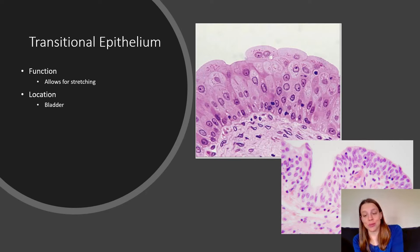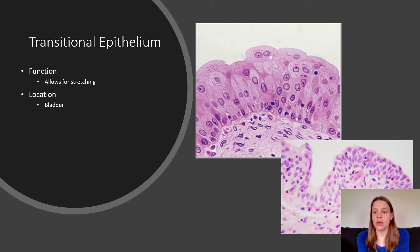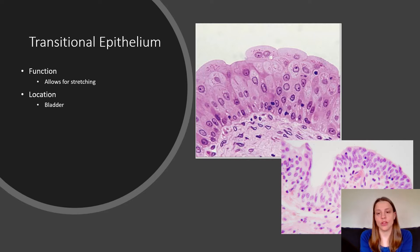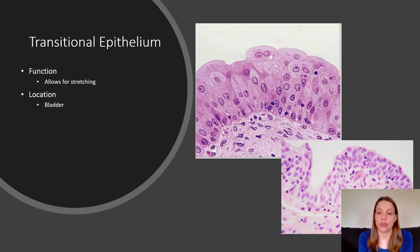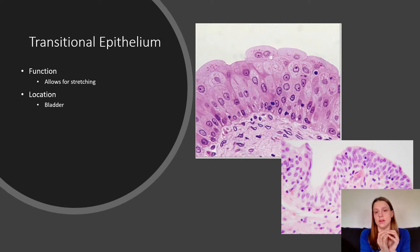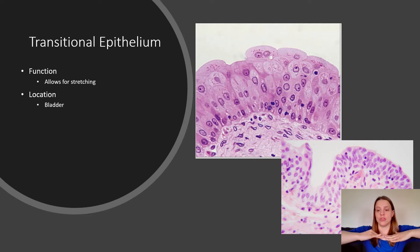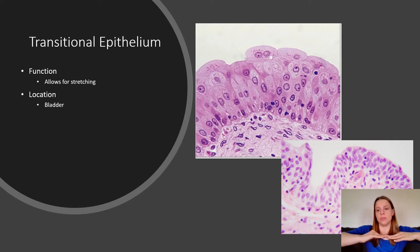Here we have transitional epithelium. I put two pictures on this slide — one is a really great picture, and the other is more like what you will see in the lab, since our slides are kind of washed out. The function of transitional epithelium is that it allows for stretch. You find it in the bladder. When your bladder is empty, the cells are bubbled up and round, but when your bladder gets full and has to stretch out, the cells stretch out and become flat — transitioning from a small shape to an open shape.